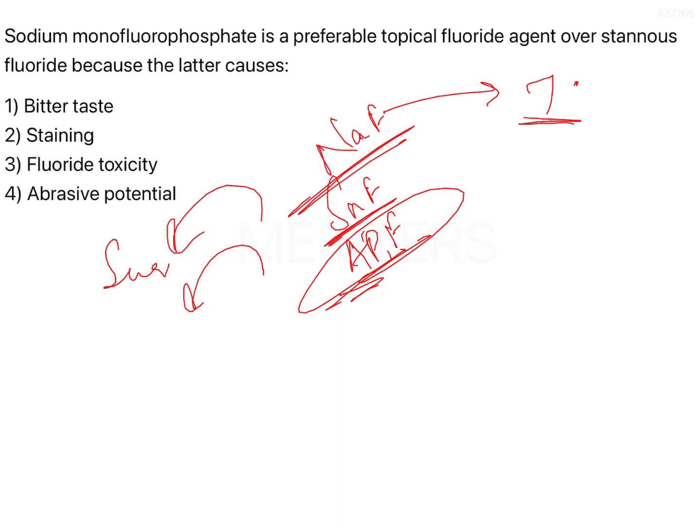Stannous fluoride has to be made freshly every time because it is a very volatile compound. One more important property of stannous fluoride is that it contains tin. Tin is a very erosive metal, so when it comes in contact with human tissue it causes a lot of irritation and a lot of erosion. In addition, tin also has the ability to cause staining — because it is a metal, it causes easy staining of the tooth structure.